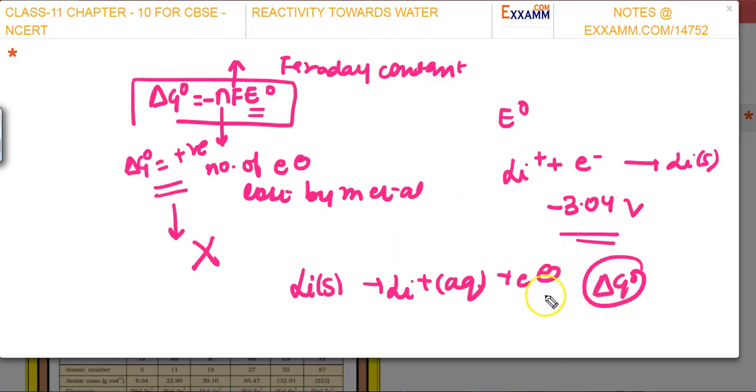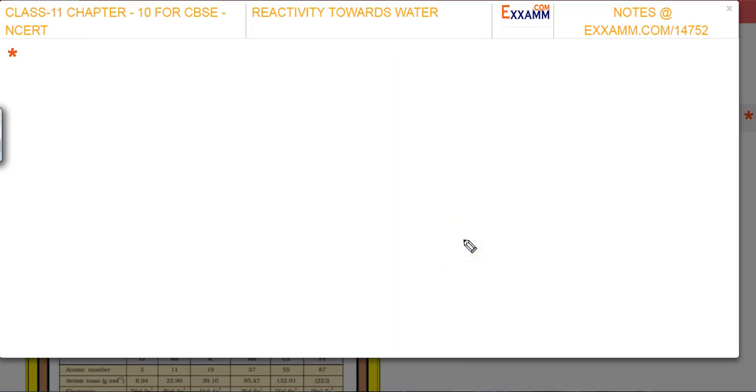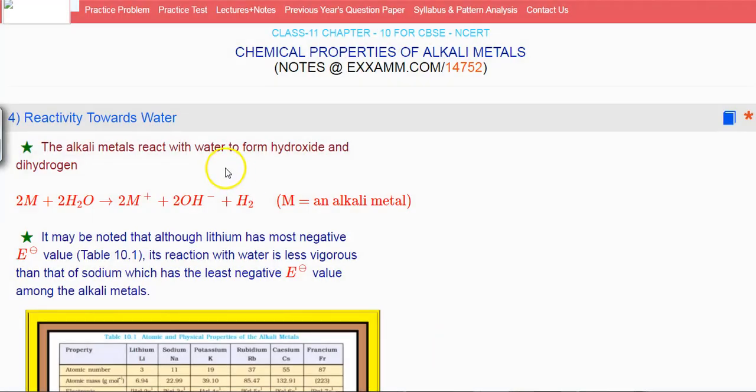The other elements don't liberate as much energy. When lithium reacts with water, it liberates a lot of energy, while sodium liberates less energy. Sodium reacts more vigorously and the hydrogen it produces catches fire. The reduction potential plays an important role here—it's less negative, which is why ΔG° becomes positive.